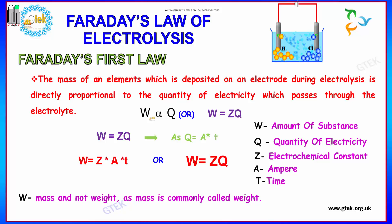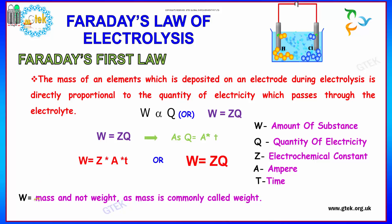The amount of substance W is directly proportional to electricity Q. So W = Z × Q, where Q = A × T (ampere multiplied by time). Therefore W = Z × A × T, where W is mass, A is ampere, and T is time.